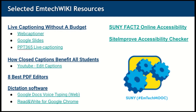Other resources found on the wiki include tutorials on how to create captions on YouTube. There is a selection of PDF editors — PDFs are one of the biggest culprits regarding accessibility. You need to make sure that items are tagged correctly so that a screen reader will correctly read the content within the PDF. Dictation software is another tool that helps in accessible situations. Google Docs has the voice typing extension — as you're talking, Google Docs can type out the text you are saying. Read and Write for Google Chrome has similar functionalities.